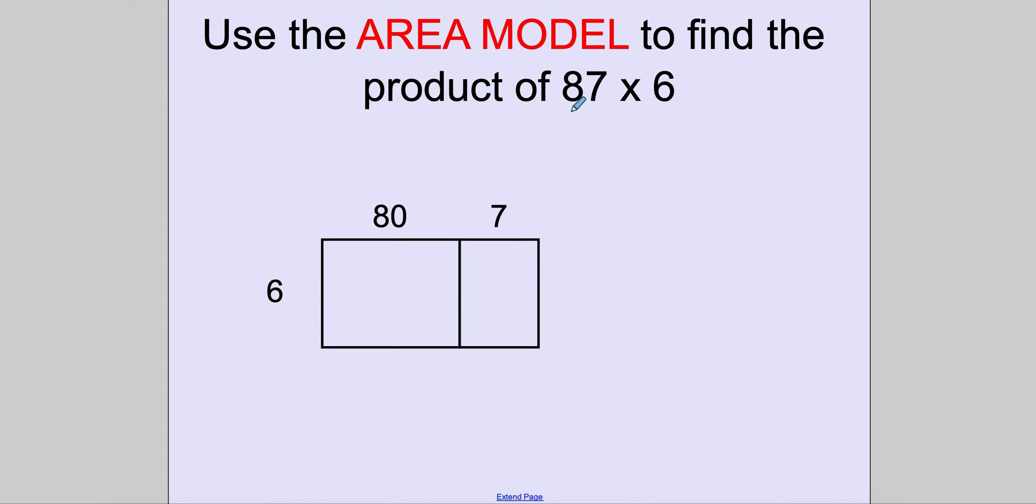If I was going to do 87 times 6, first thing I need to do is find the expanded form of 87, which is 80 plus 7.